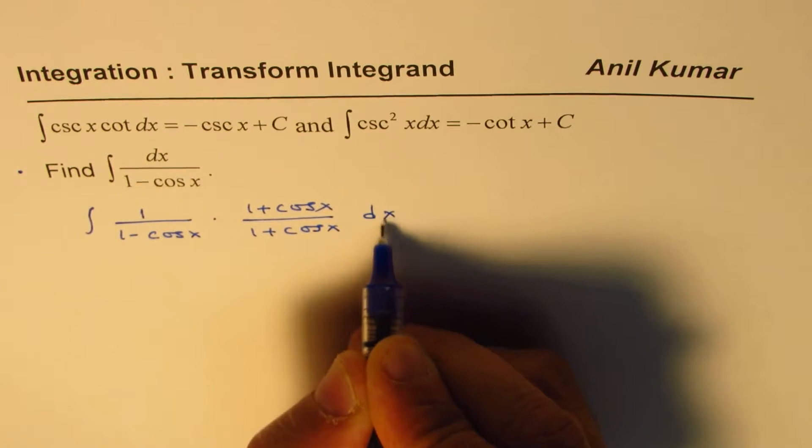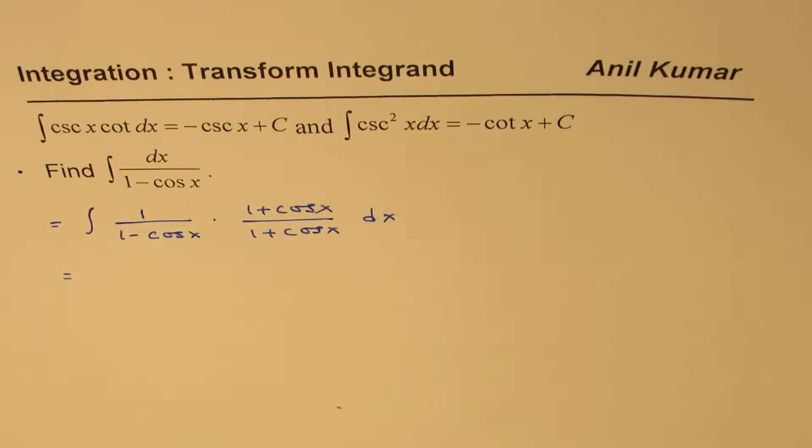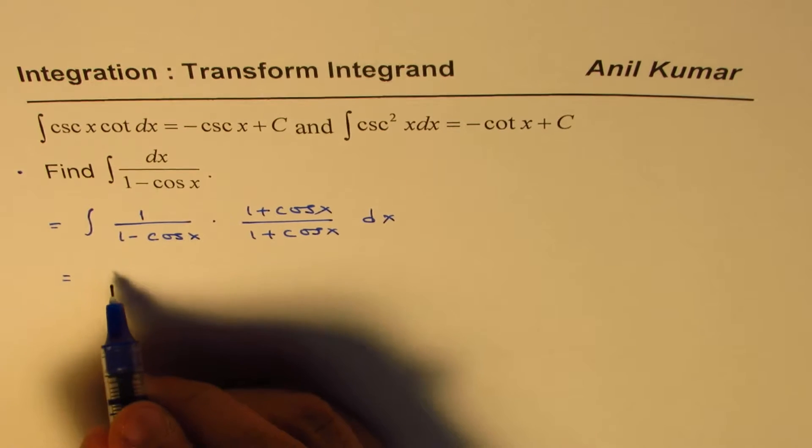So in solving trigonometric integrals, most of the time, we are working like we used to work for identities. You need to simplify, write in simpler terms, and then we might be in a position to get the integral of the function.